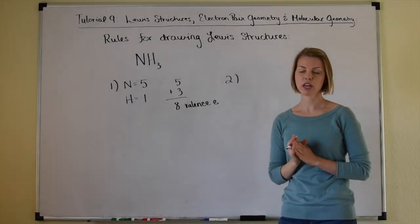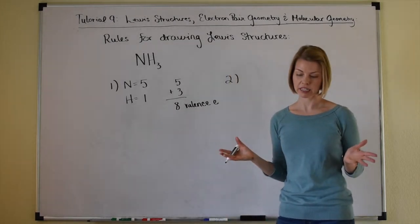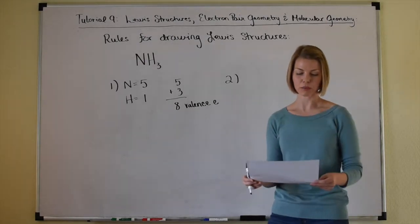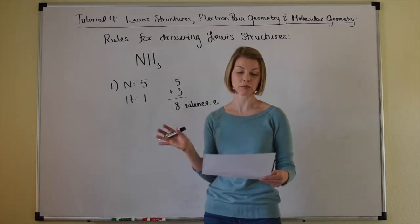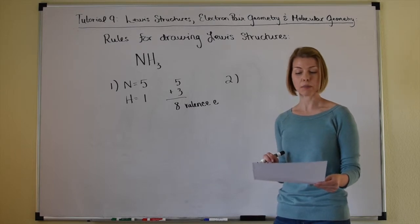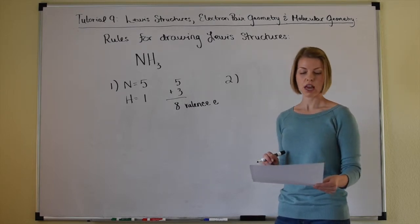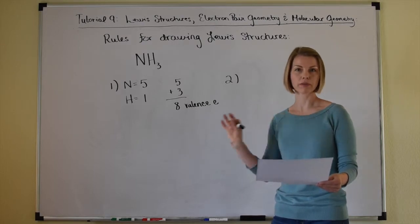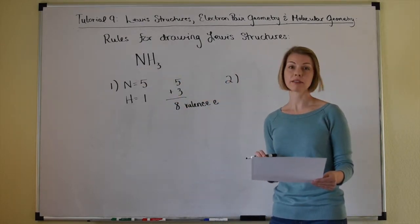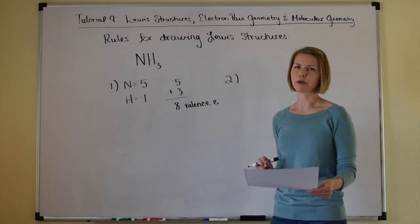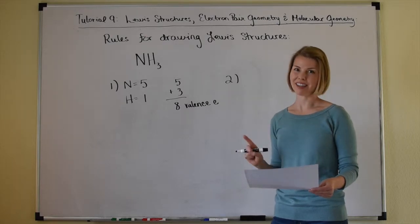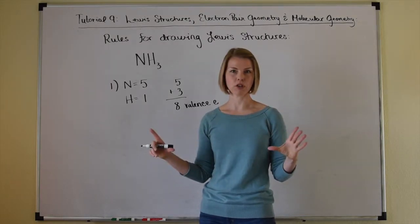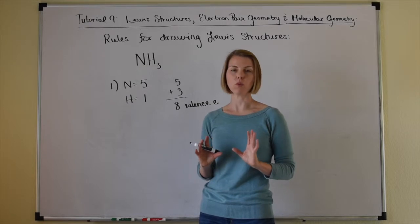Rule number two: show single bond connectivity between the atoms. The central atom is typically the one there is the fewest of. Hydrogen is always going to be terminal because hydrogen can only form one bond — it can never be covalently bound to more than one atom. So our hydrogen atoms are terminal, and there's only one way to connect these four atoms: nitrogen in the middle with single bond connectivity to the three hydrogen atoms.